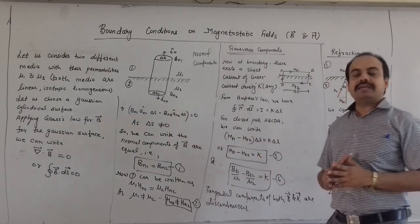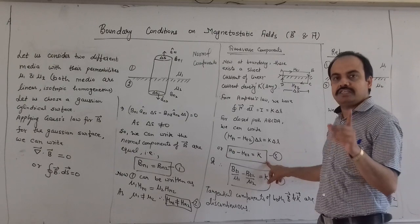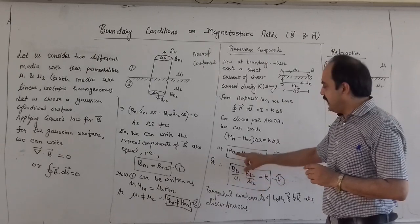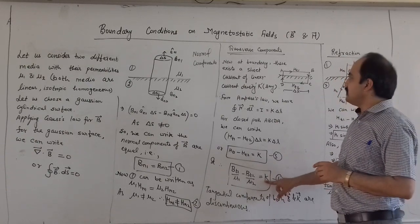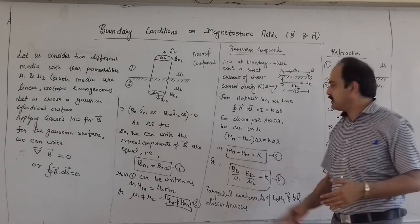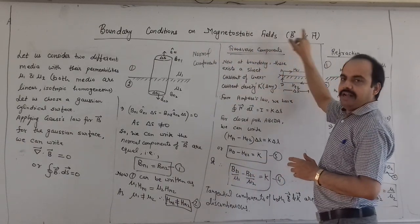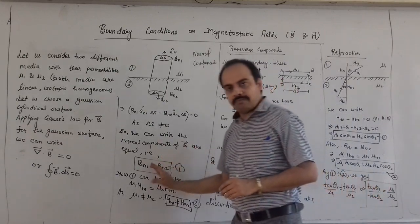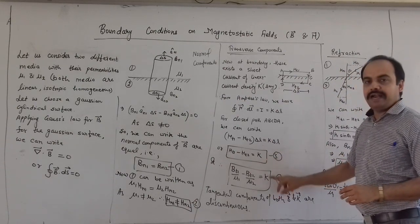So we can say that the tangential component of H is discontinuous if current density or surface current K is present. In terms of B, since H equals B upon mu, we write BT1 upon mu1 minus BT2 upon mu2 is equal to K. Thus we can say that the tangential components of both B and H are discontinuous if current is present. So we have derived the boundary conditions for magnetic flux density B and magnetic field intensity H for both normal and tangential components.